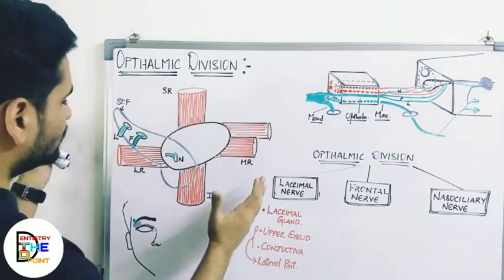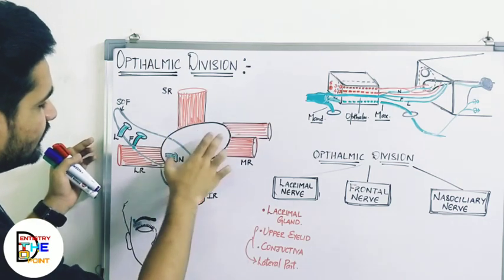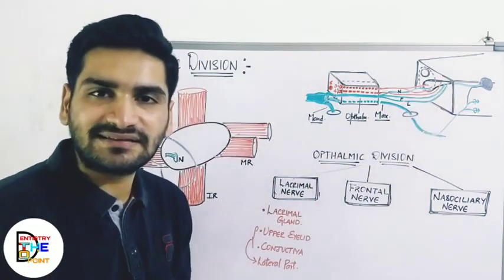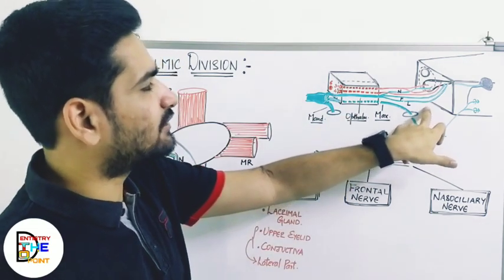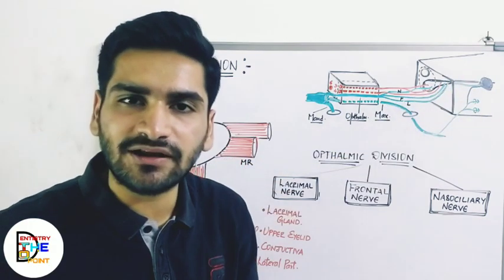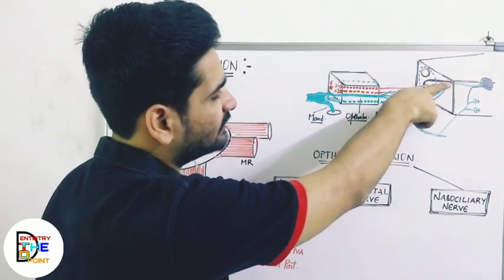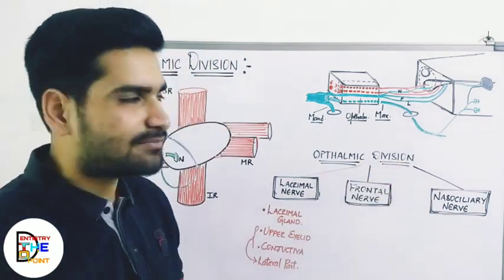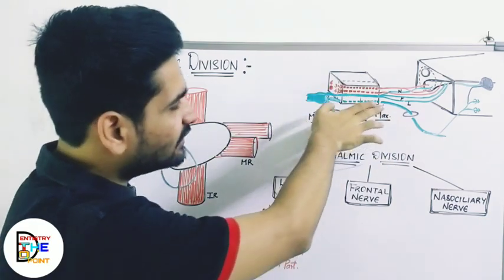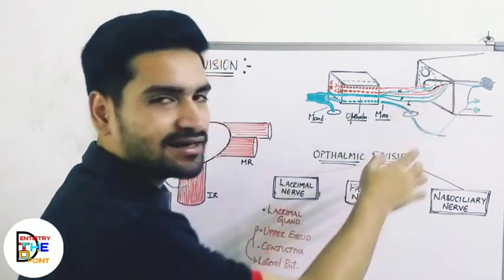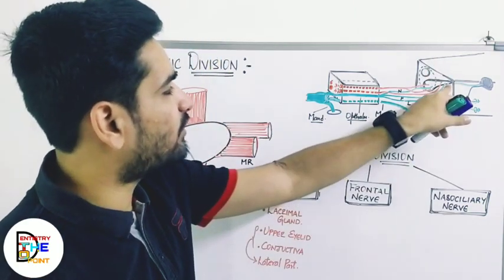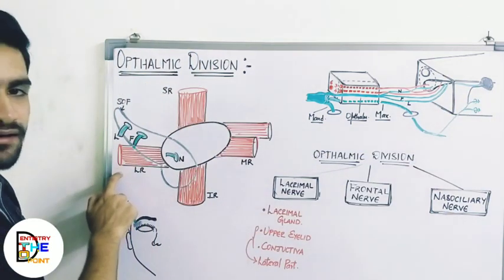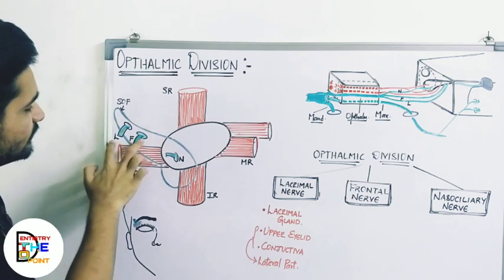The medial aspect of the superior orbital fissure is covered by the common tendinous ring; the lateral part is covered by nothing. From the lateral aspect, two branches of the ophthalmic nerve exit. First is lacrimal — the lacrimal nerve crosses through the lateral most part of the superior orbital fissure, then runs along the lateral wall of the orbit above the lateral rectus muscle.